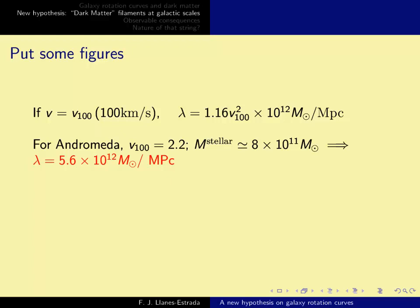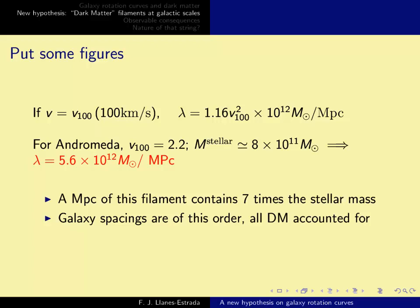Remember, in the solar system, our scale was like 30-40 km per second in the first clip of this series, so these are large velocities. Now, this suggests that lambda is about 5.6 times 10 to the 12th solar masses per megaparsec, so here's an estimate of the linear density of these cylinders.